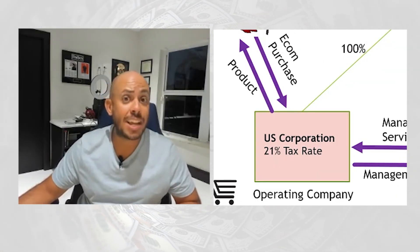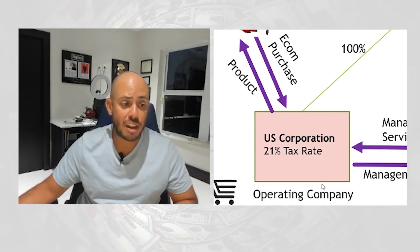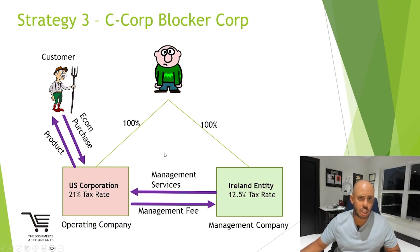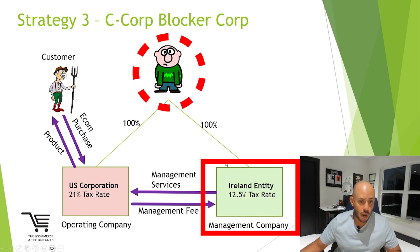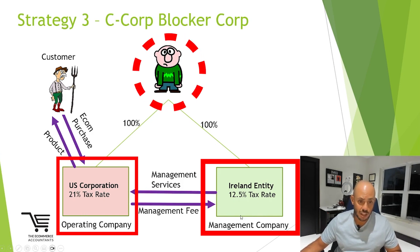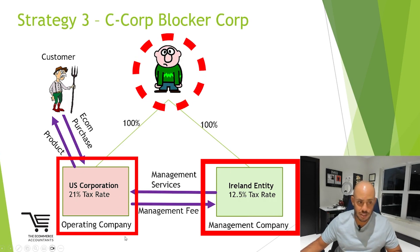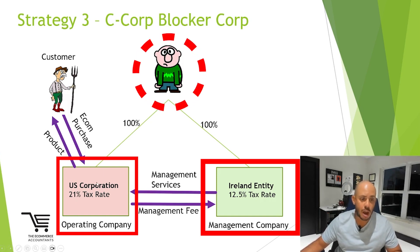If you are in a country that has a high tax rate, you can force effectively connected income and basically benefit from the 21% tax rate here in the U.S. The situation is exactly the same as video one: you have an entrepreneur, in this case located in Ireland, who owns 100% of an Irish entity and 100% of a U.S. corporation. The Irish entity is the management company; the U.S. corporation is the operating company. The operating company has its own bank accounts, credit cards, owns the Shopify or Amazon brand, owns inventory if there is any, owns the ad accounts — everything. It's truly the e-commerce operating company.